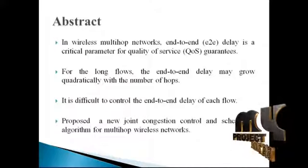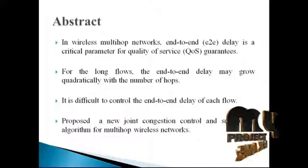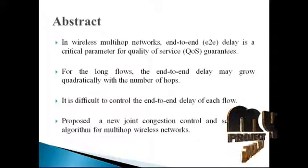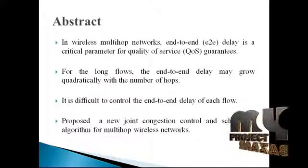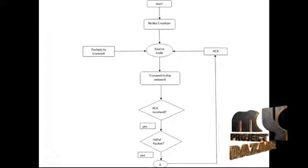For long flows, the end-to-end delay may grow significantly with the number of hops, and it is difficult to control the end-to-end delay of each flow. To address these problems, the proposed system introduces a joint congestion control and scheduling algorithm that can achieve both provable throughput and provable per-flow delay. The proposed system consists of three components: window-based flow control, virtual rate computation, and scheduling. The main idea is to control end-to-end delay by using window-based flow control to tightly control the number of packets inside the network, and by using a virtual rate scheduling algorithm so we do not wait for packets to accumulate before making scheduling decisions.